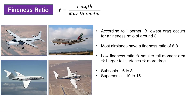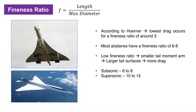For an aircraft where the internal components can be rearranged and the cross-section diameter can be reduced as needed, the optimum fineness ratio for subsonic aircraft is somewhere between 6 and 8. Supersonic designs will have a fineness ratio of 10 to 15 or more. Concorde had a fineness ratio of 16.7.